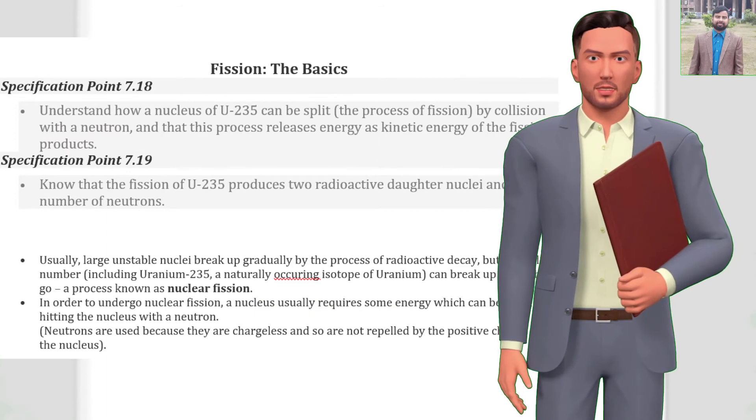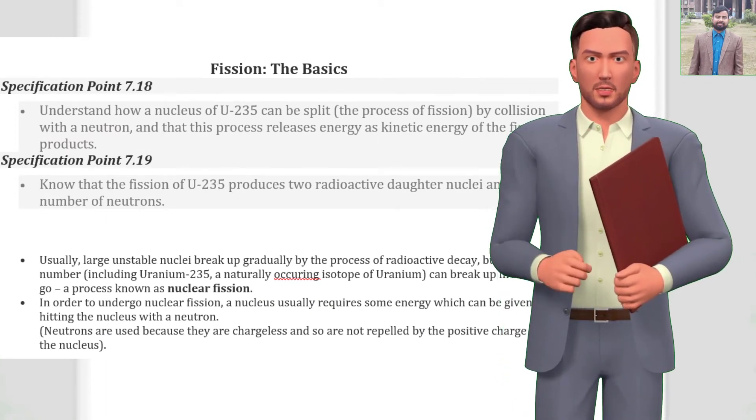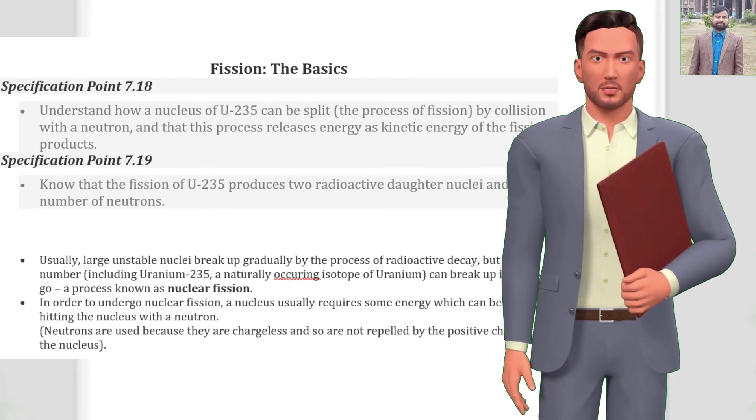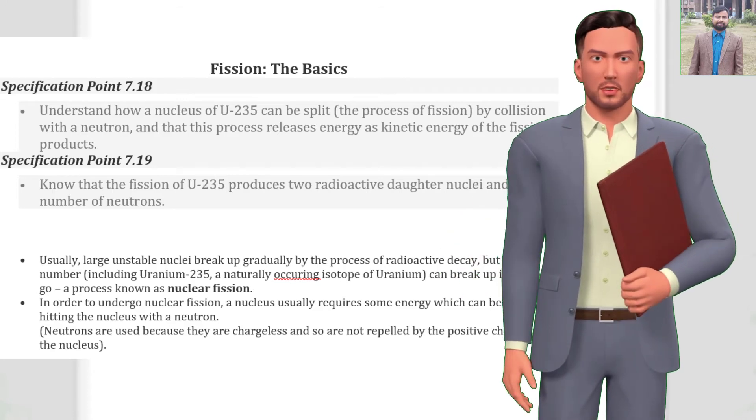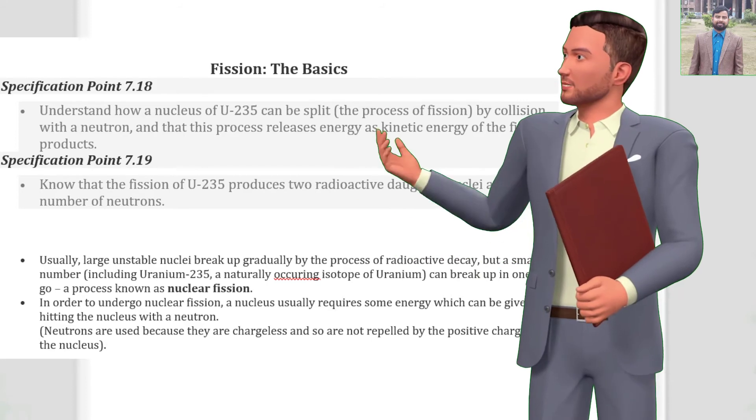Fission: The basics. Specification point 7.18. Understand how a nucleus of U-235 can be split, the process of fission, by collision with a neutron, and that this process releases energy as kinetic energy of the fission products. Specification point 7.19.